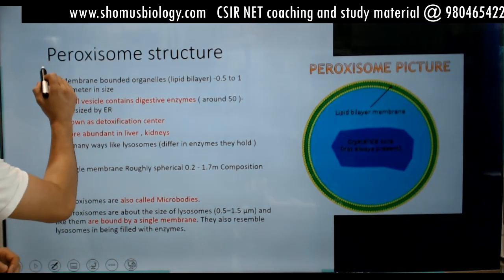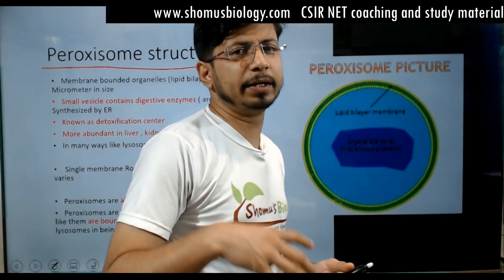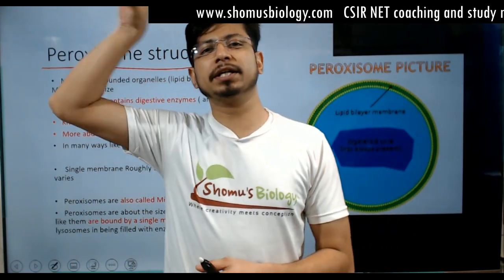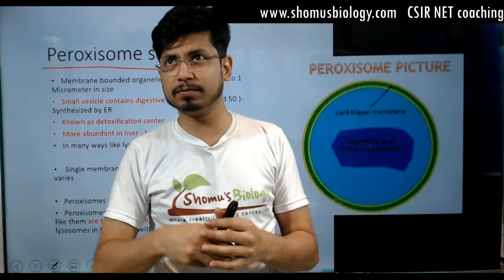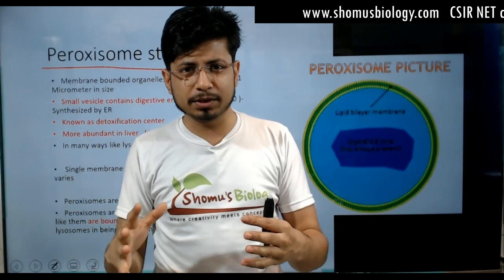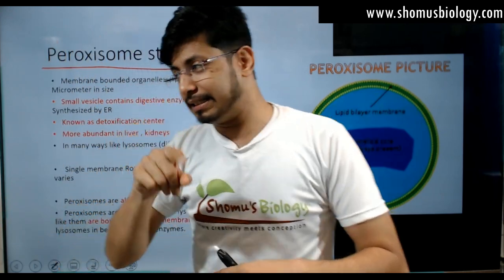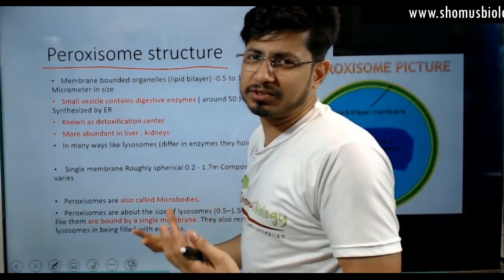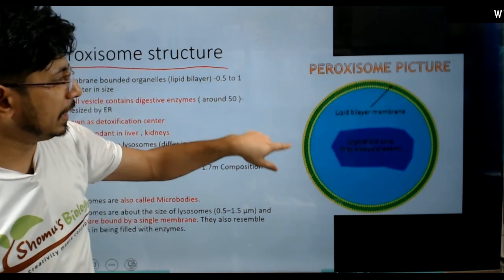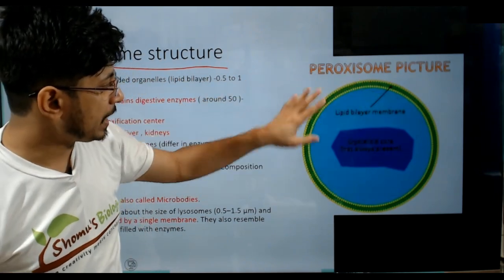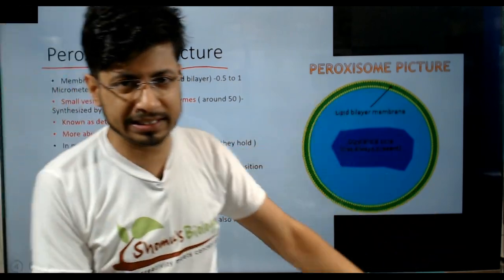So what is paroxysome? When we say nucleus, there is a picture in our mind. When you say mitochondria, there is a picture in our mind. Lysosome, there is some picture. But when you say paroxysome, there is no picture in our mind generally. The reason behind it is that there is no discrete structure of the paroxysome. If you look at this picture, this is a schematic drawing. It has a lipid layer and some crystalloid core inside. That is paroxysome basically.